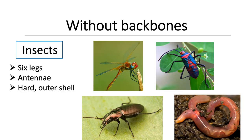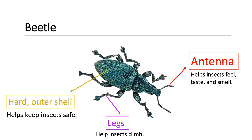Insects are animals without a backbone. An insect has six legs, antennae, and a hard outer shell. This is a beetle — it's an animal without a backbone. It has six legs, antennae, and a hard shell. Antennae help insects feel, taste, and smell. Their legs help insects climb, and the hard outer shell helps keep insects safe.